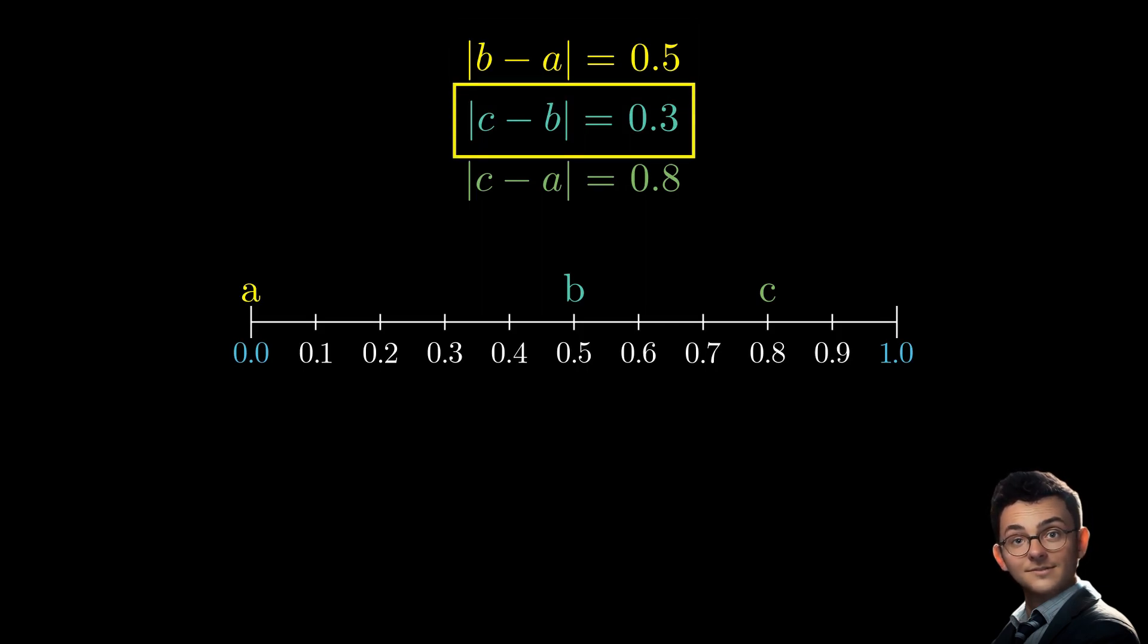However, if we increase the distance between a and b to exceed 0.5, we can notice that the distance between b and c becomes smaller. Even if we assign c the maximum value of 1, the absolute value of c minus b remains always less than 0.5.